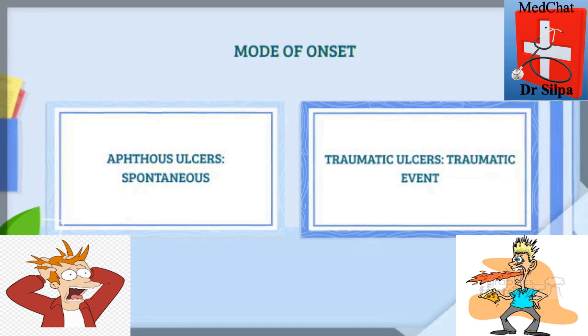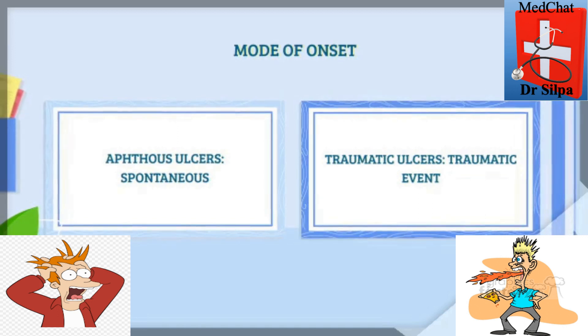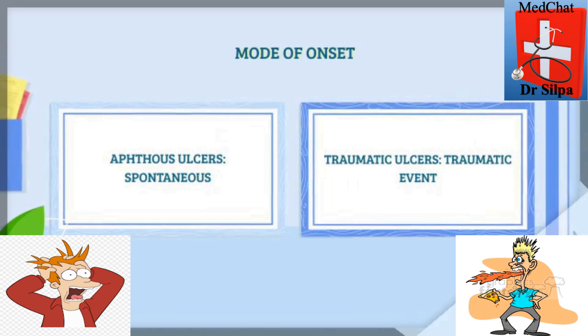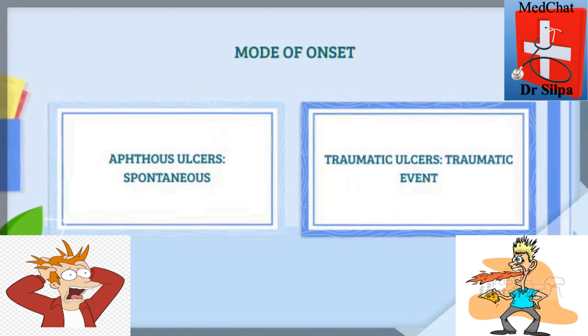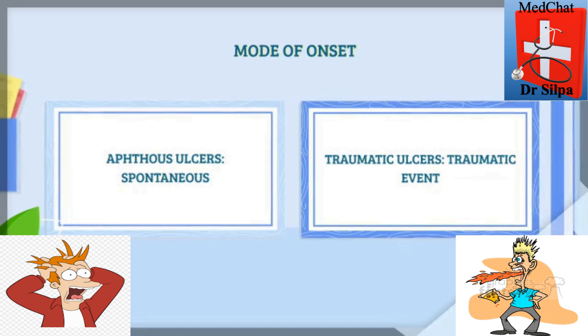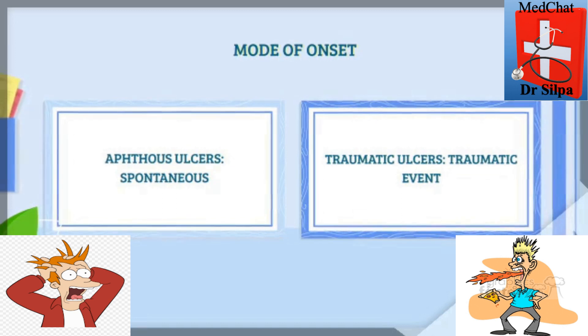stress, heredity, nutritional deficiency, or allergy. Traumatic ulcers occur due to a traumatic etiology that can be from the sharp edges of a tooth, a denture, or even consumption of hot food.